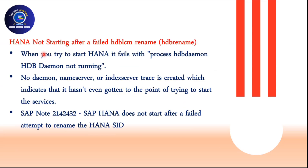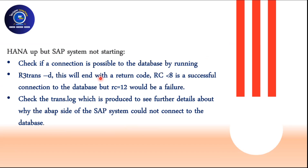Next is the database rename scenario - we sometimes rename databases and after the rename the database may not start. Refer to the relevant SAP note for that. Next, if HANA is up but the SAP system is not starting, which is very common - use the R3trans -d command to check. If R3trans -d gives you an error, it means the database-to-application connection has not been established. Check the trans.log file. To fix it, use the sdb user store, create the entry, and update the schema password for your SAP HANA database. Run sdb user store on the application side, then SAP can connect to the database. R3trans -d will return code 0000, meaning the database is able to connect with the application, the dispatcher can accept connections, and your SAP system will start up.